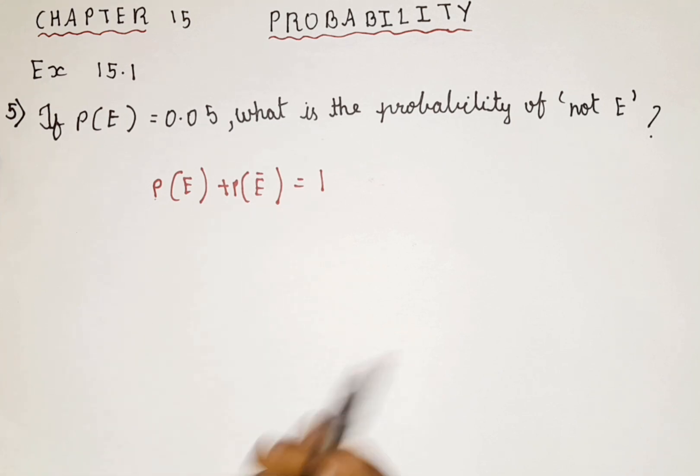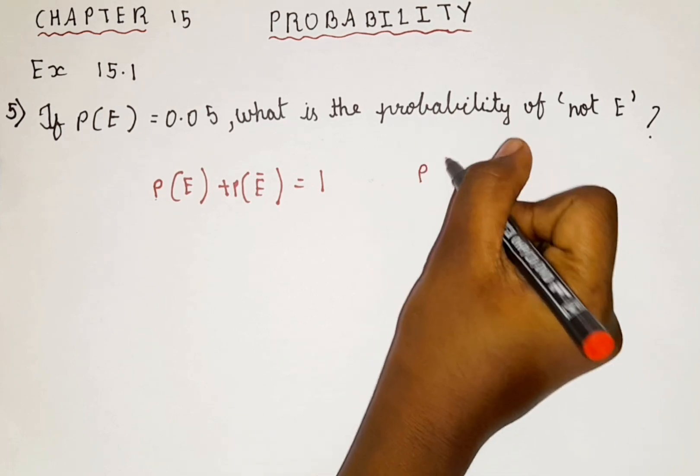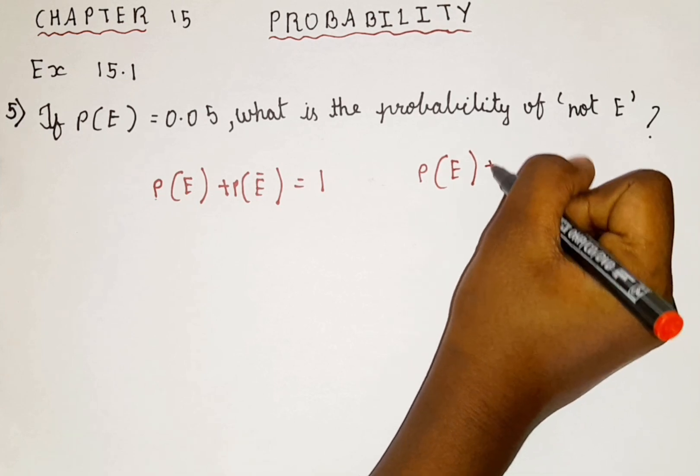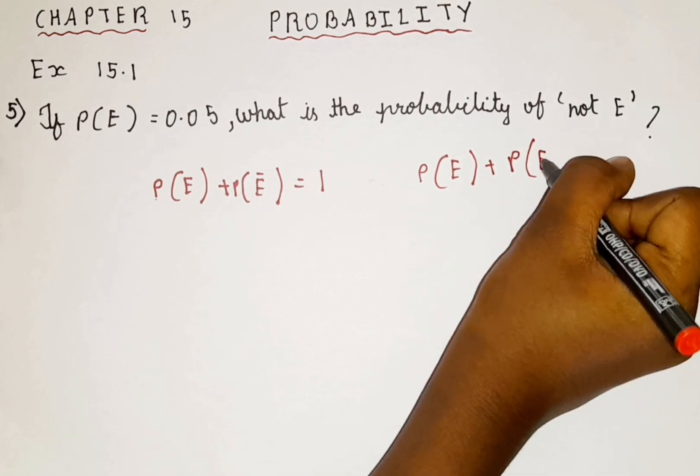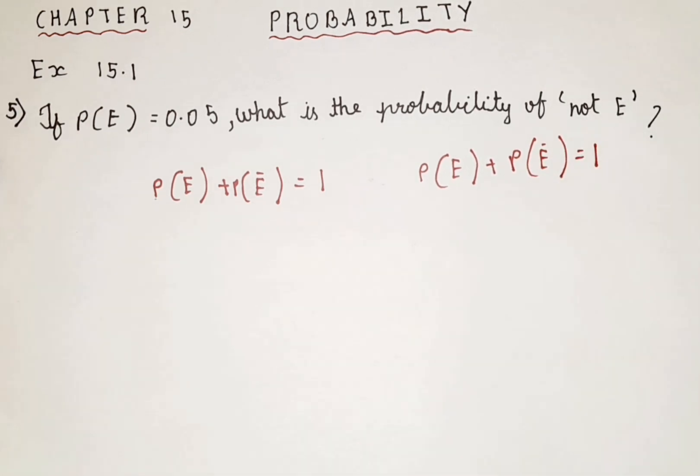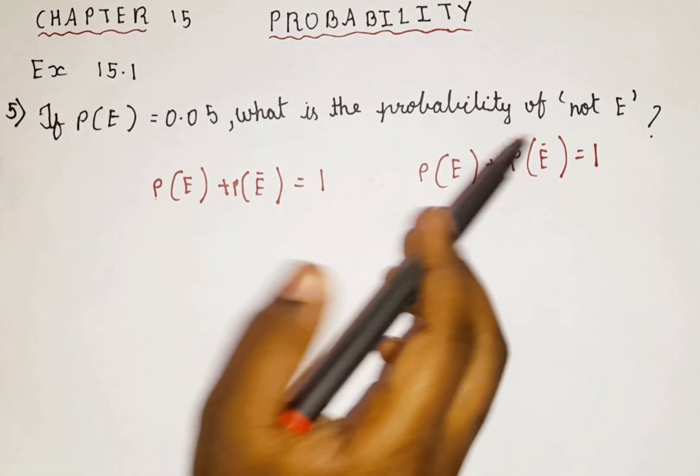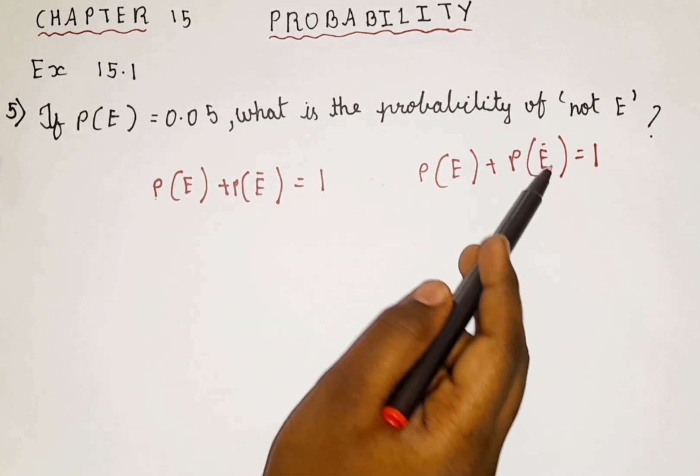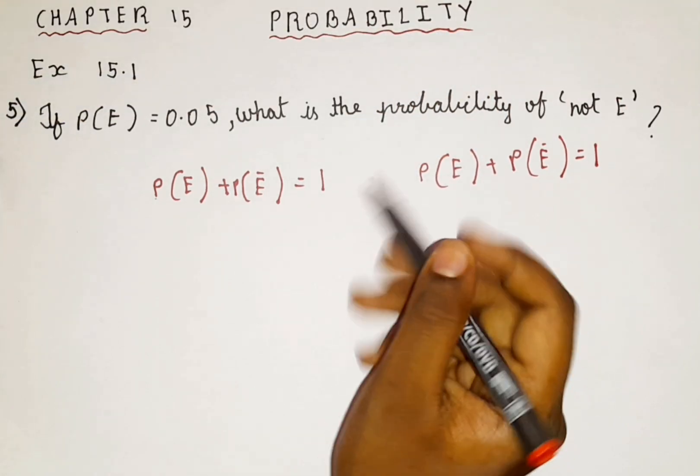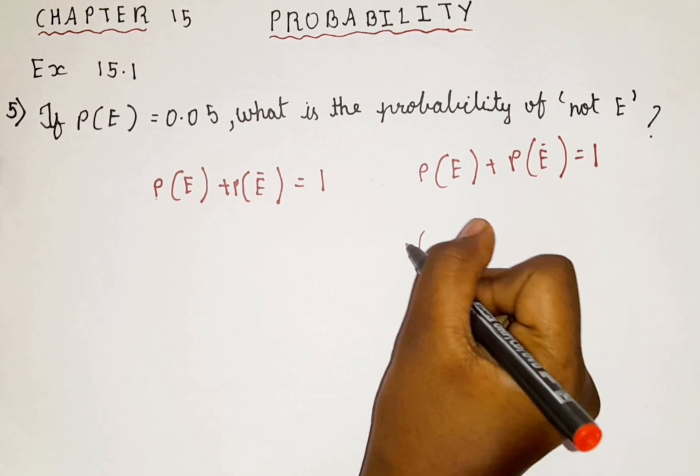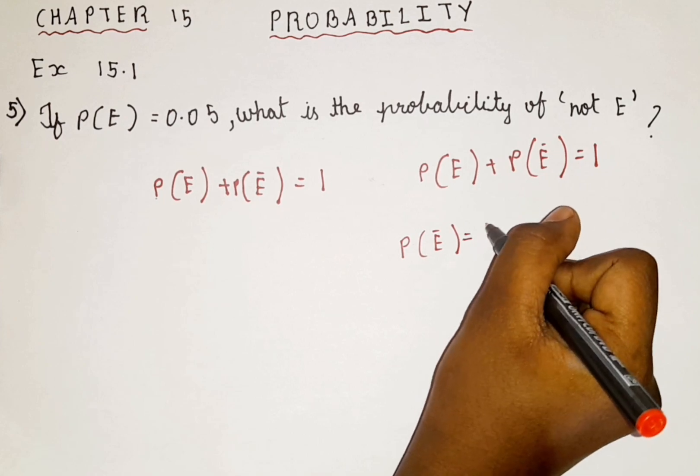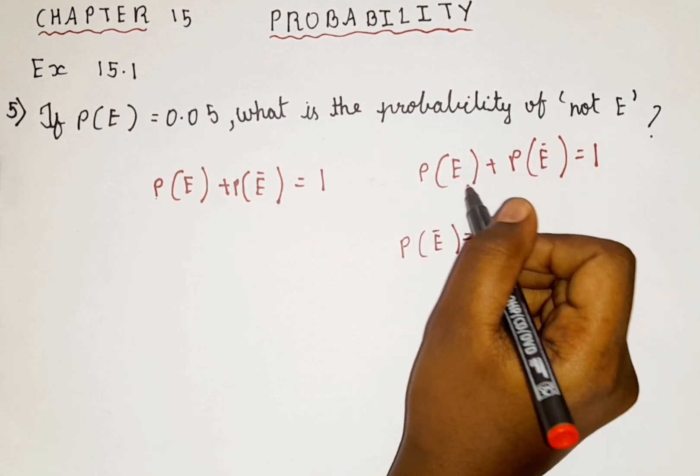So let me write it here, we shall solve it in here. So probability of an event plus probability of not an event is equal to 1. So now we are going to be finding the probability of not an event. So we are going to convert probability of an event to the other side. So probability of not an event is equal to 1 minus probability of an event.